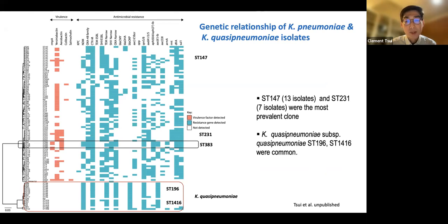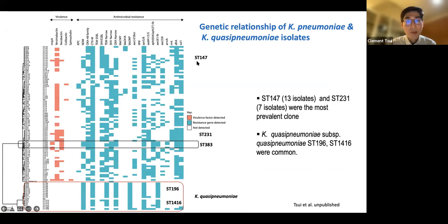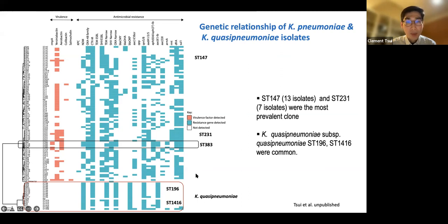Mostly Klebsiella pneumoniae and also Klebsiella quasipneumoniae. The tree shows the presence or absence of AMR genes in blue and virulence genes. The most prevalent sequence types in Klebsiella are ST147 and ST231. Klebsiella quasipneumoniae is very homogeneous, with two dominant sequence types: ST196 and ST1416.